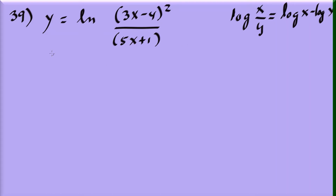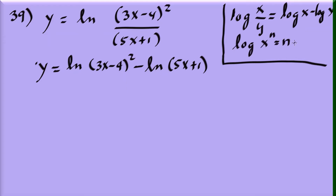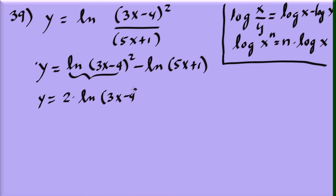Rewrite as: natural log of (3x minus 4) squared minus natural log of (5x plus 1). Then apply the exponent property: natural log of (3x minus 4) squared equals 2 times natural log of (3x minus 4). So the full expression becomes 2 times natural log of (3x minus 4) minus natural log of (5x plus 1).